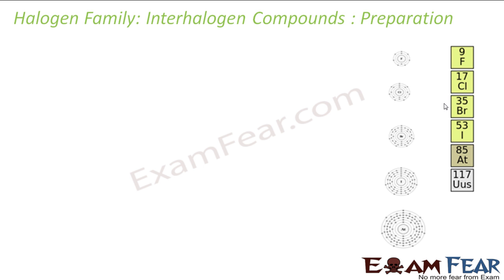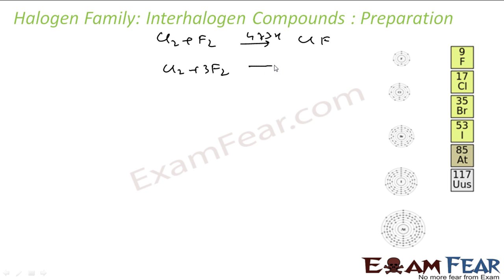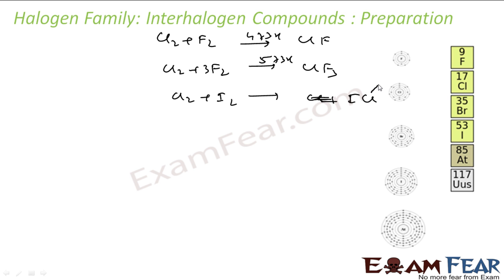The preparation of interhalogen compounds is by direct combination of two halogens. For example, chlorine plus fluorine at 473 K in equal volumes gives ClF; with excess fluorine at 573 K, you get ClF3. Similarly, chlorine reacts directly with iodine in equal volumes to give ICl - written as ICl because chlorine is more electronegative and goes on the right side. With excess chlorine, iodine reacts with chlorine to give ICl3.